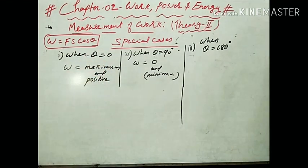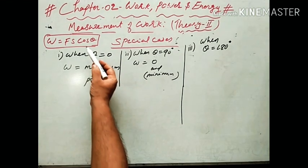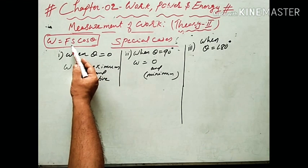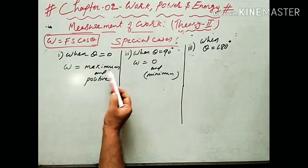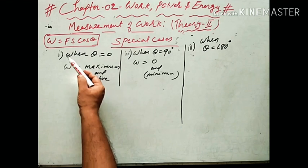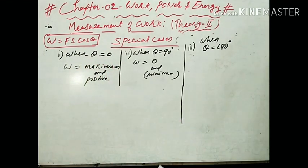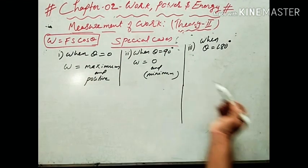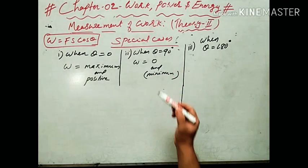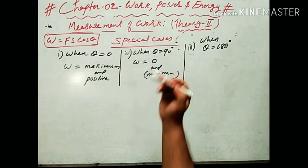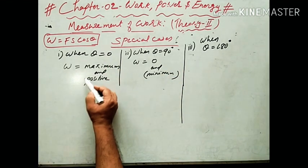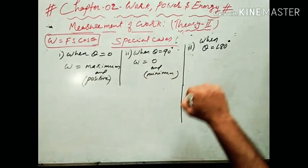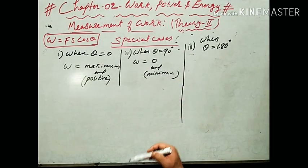According to W equals FS cos theta, the nature of work done depends upon the value of cos theta. When theta equals 0 — force and displacement in the same direction — work done is maximum and positive. When theta equals 90 degrees — force and displacement are normal to each other — work done is zero and minimum. So when a satellite is moving around the earth, the work done will be zero.